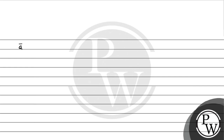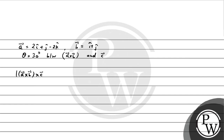So vector a is 2i plus j minus 2k, and vector b is i plus j. Let theta be the angle between vector a cross b and vector c. We need to calculate the magnitude of a cross b cross c, which equals the magnitude of a cross b times the magnitude of c times the sine of the angle between them — and that angle is 30 degrees, so sine 30 will appear.